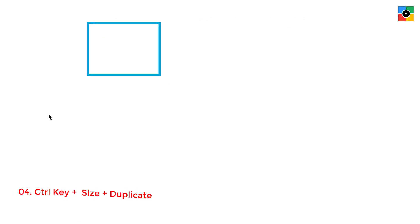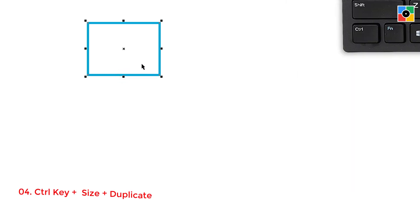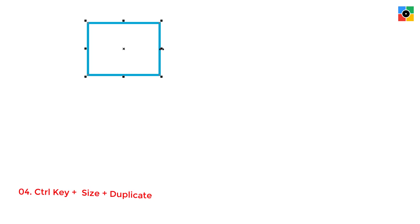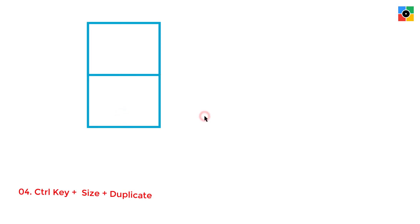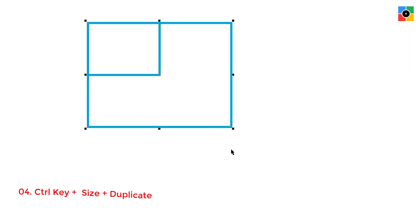Sometimes in design you need to create a two-times bigger duplicate object, and for that you need to use these three commands simultaneously. Select an object, press and hold the Ctrl key, click on the right center handle, hold down the mouse button and move the cursor to the right side of the object, click and hold down the right mouse button, leave the left mouse button first, then leave the right mouse button, and finally leave the Ctrl key. This creates a two-times bigger width duplicate object. Similarly, you can create a two-times bigger height or proportionate duplicate object. Try creating two, three, or four times bigger duplicate objects using these three commands simultaneously.